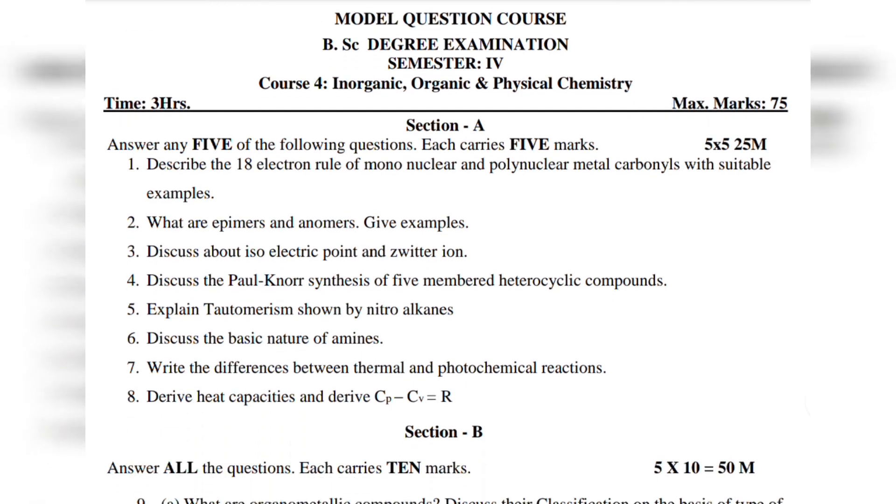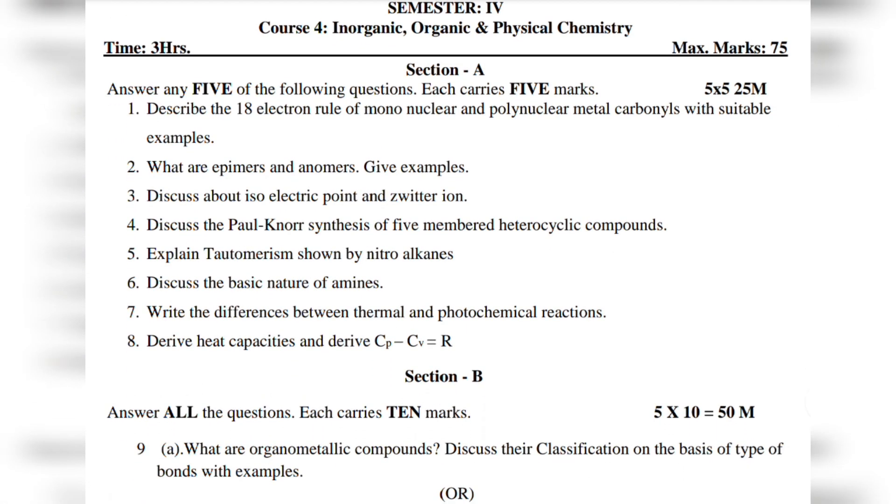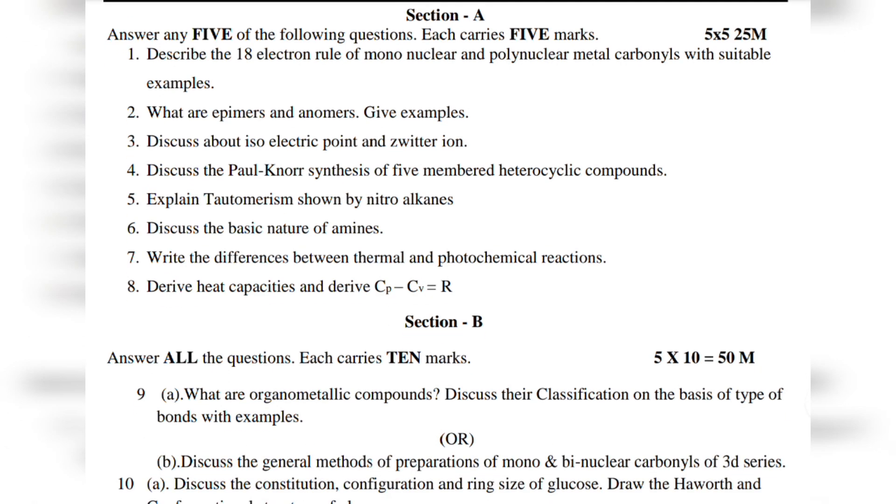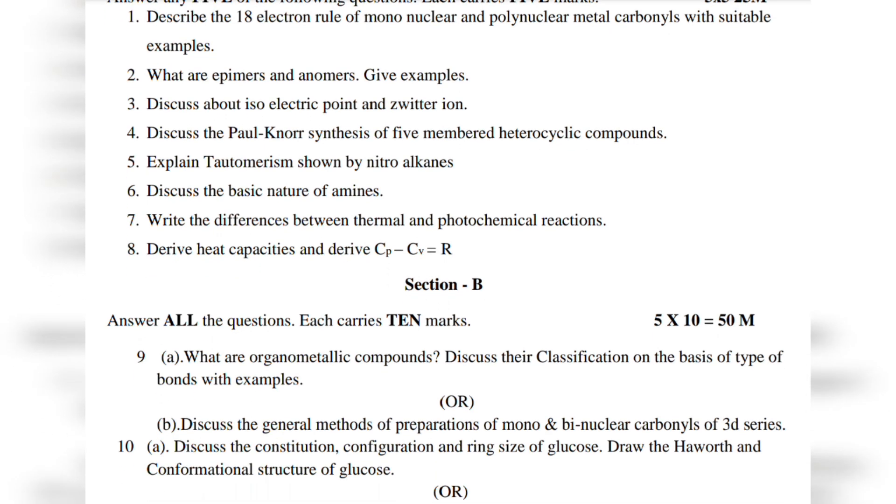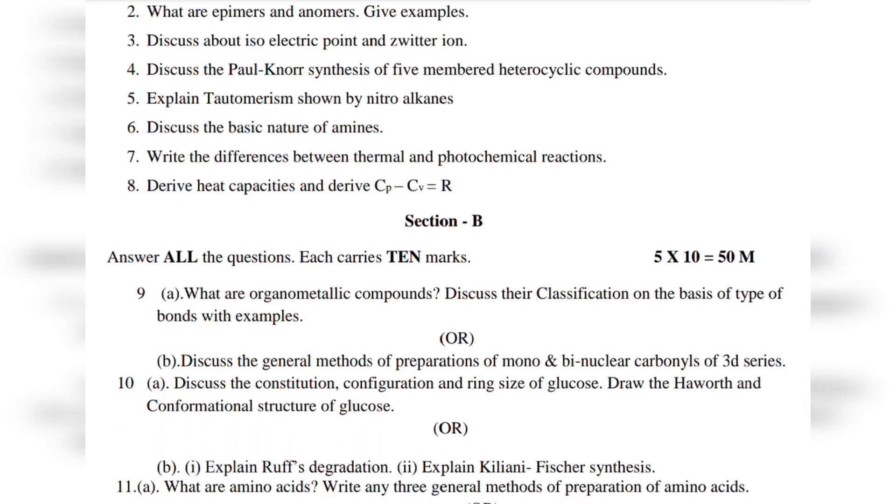Then Section B. Question 9a: What are organometallic compounds? Discuss their classification on the basis of types of bonds with examples. Question 9b: Discuss the general methods of preparation of mono and binuclear carbonyls of 3d series. Question 10a: Discuss the constitution, configuration and ring size of glucose. Draw the Haworth and conformational structure of glucose. Question 10b: Explain Ruff degradation and Kiliani-Fischer synthesis.